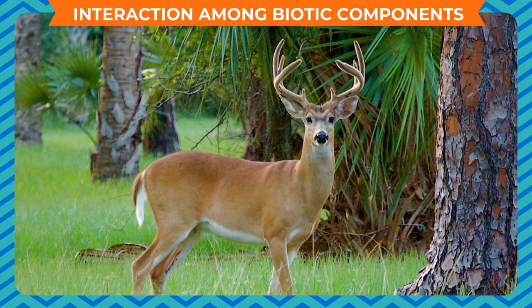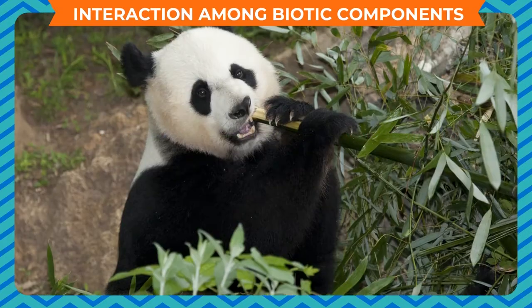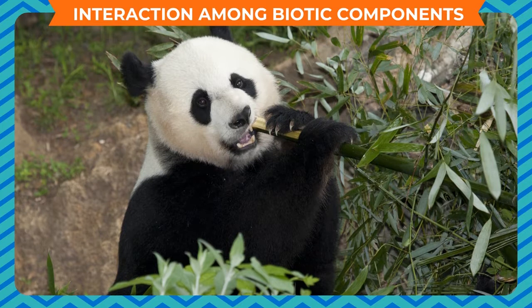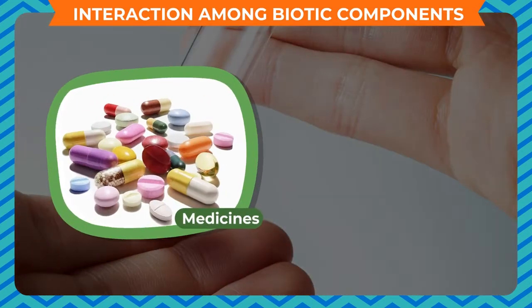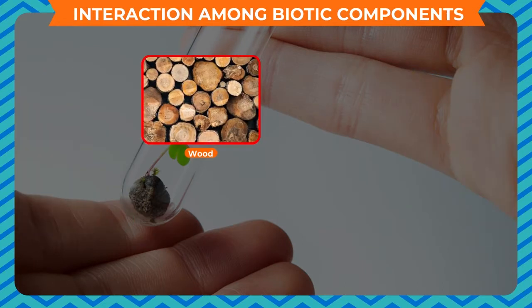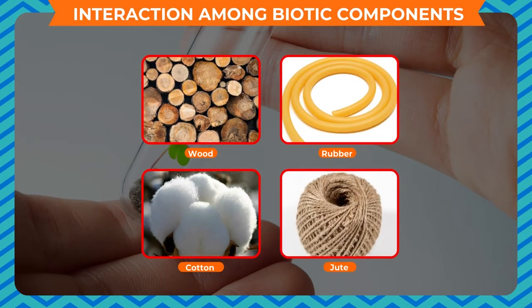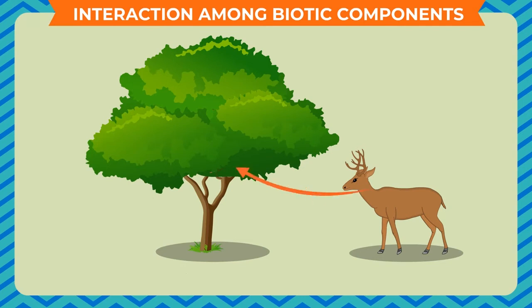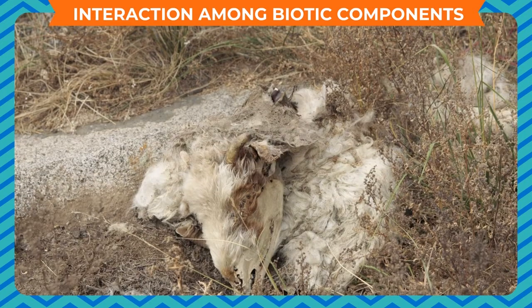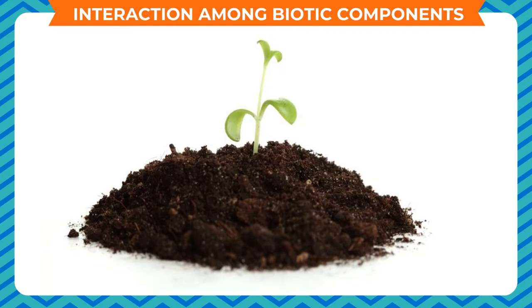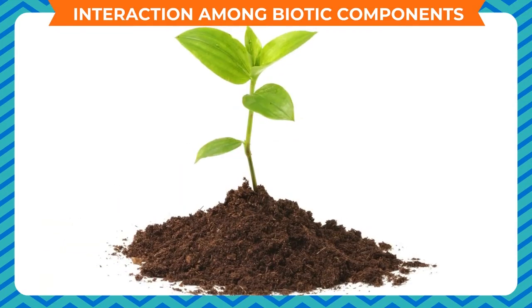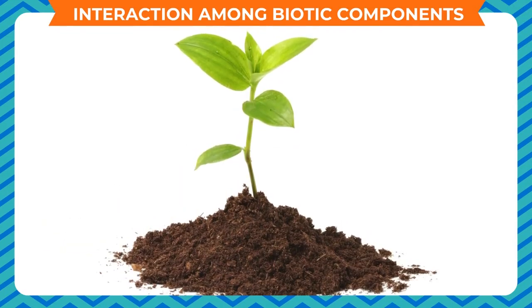Animals depend on plants for food, oxygen and shelter. Human beings get medicines, spices, wood, rubber, cotton and jute from plants. Plants depend on animals for carbon dioxide, pollination and dispersal of seeds. Decomposition of animal excreta and their dead bodies adds nutrients to the soil, acting as manure and providing minerals for plant growth.